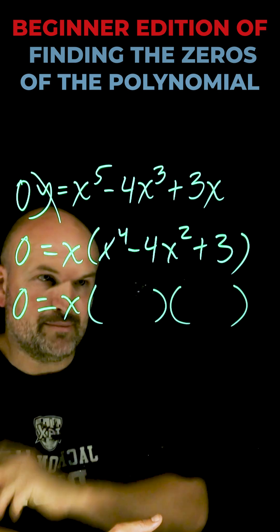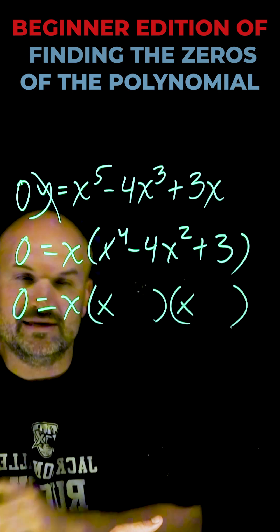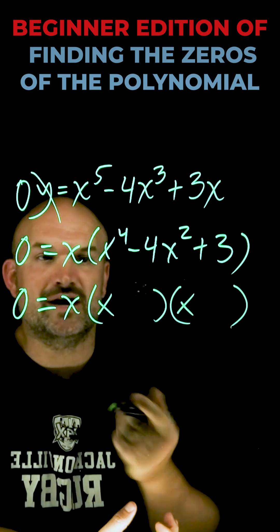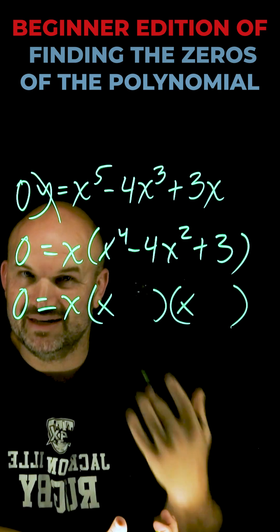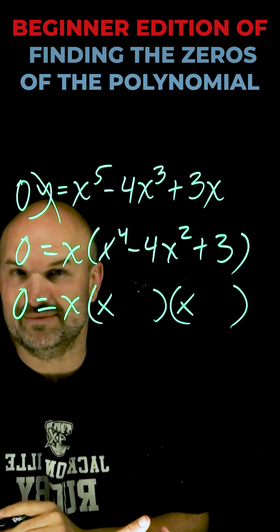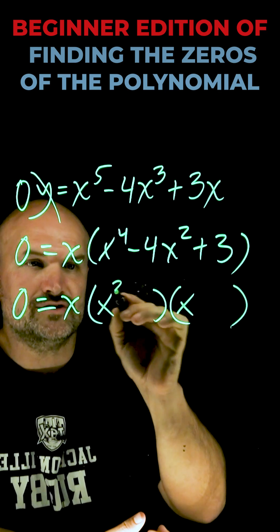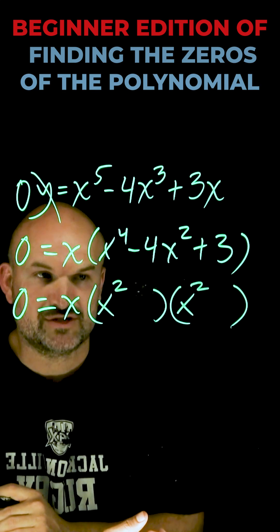Okay, so I'm going to write down my products of two binomials. I know my first two terms always multiply to give me x to the fourth. Now for quadratic trinomials, x times x gave me x squared. But in this example, I need them to multiply to give me x to the fourth. So I'm going to raise the power of my two factors to x squared times x squared.